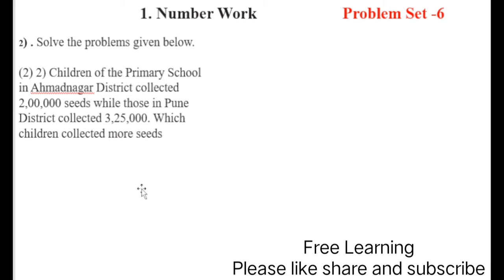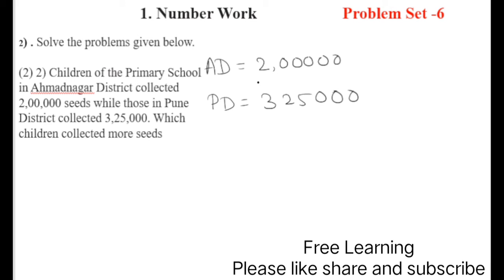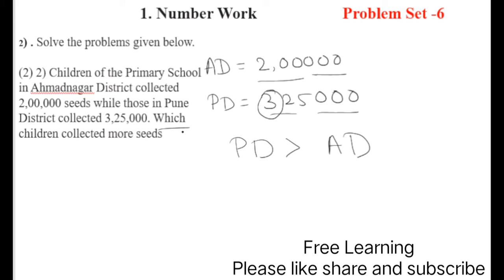Now let's start the next part: children of a primary school in Ahmednagar district collected two lakh seeds, and children in Pune district collected three lakh twenty-five thousand seeds. From the digits: three and three, six and six — same — but the first number here is bigger. So write that Pune district children collected more seeds compared to Ahmednagar district.